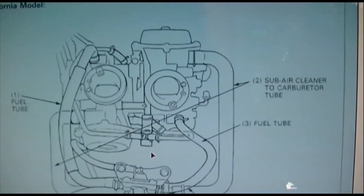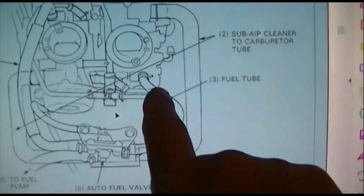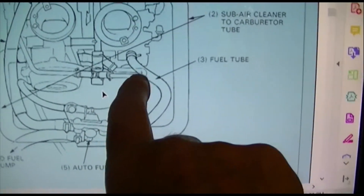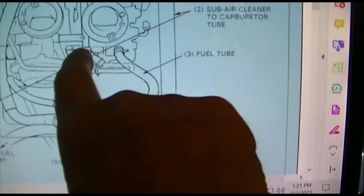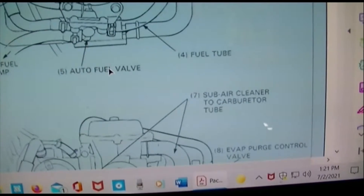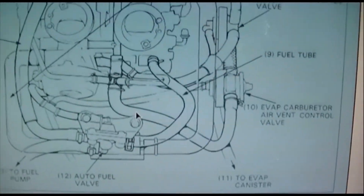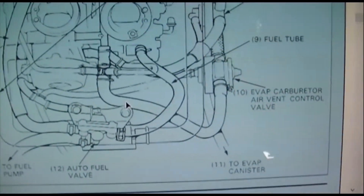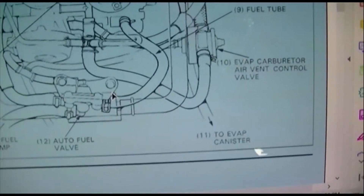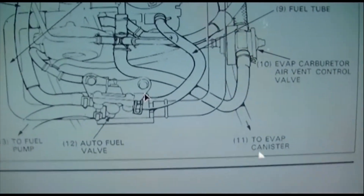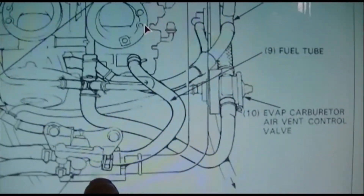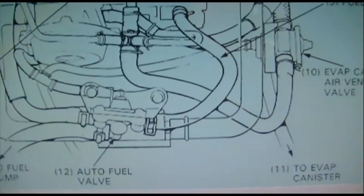Here is the tube diagram for the California model, and here is the diagram for the 49-state model. The difference is that the air valve is not connected on the 49-state model and is not blowing material into the intake manifold. Otherwise it is all exactly the same as California — the difference being this tube from the air valve coming in here and the vacuum valves that control everything. I still don't understand the sub-air cleaner to carburetor tubes that come down to this little filter box.